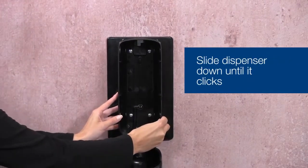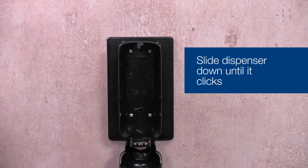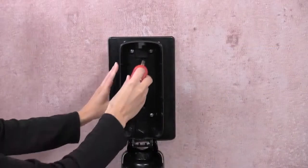Slide the dispenser down to snap into place. Take your Phillips head screwdriver and tighten the four screws.